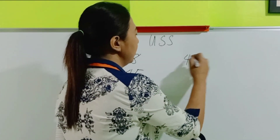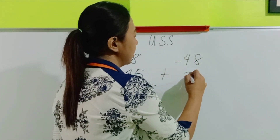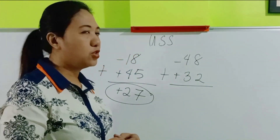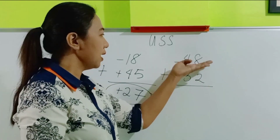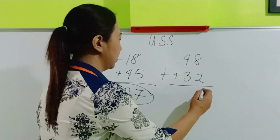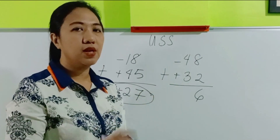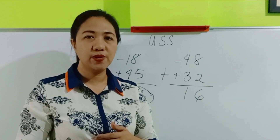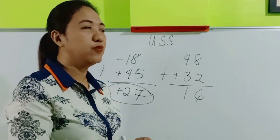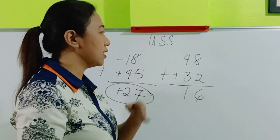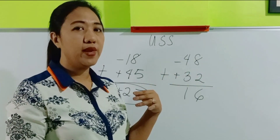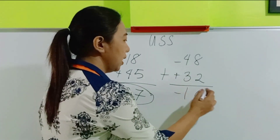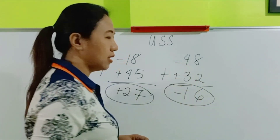Another example: negative 48 plus 32. Let us subtract because they don't have the same signs. 8 minus 2 is 6, and 4 minus 3 is 1. Then we follow the sign of the bigger digit in its absolute value — 48 is bigger than 32. Therefore, we follow the sign of negative 48, so the answer is negative 16.